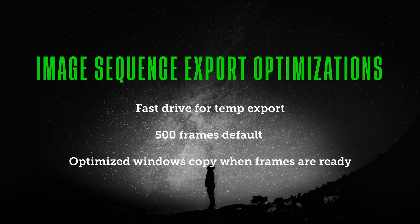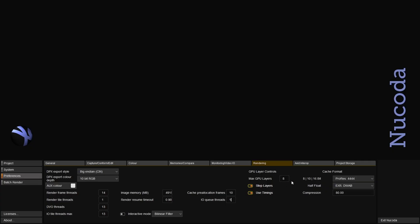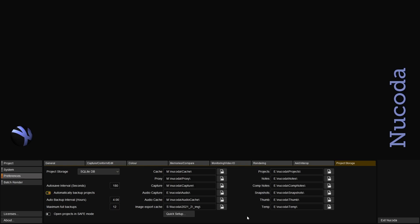We have also added a feature where you can set up a temporary image export location. This allows exports to write a set amount of frames — 500 by default — locally first, then perform an optimized Windows copy to a shared storage location. The image export cache setting can be found in the Preferences Project Storage tab.